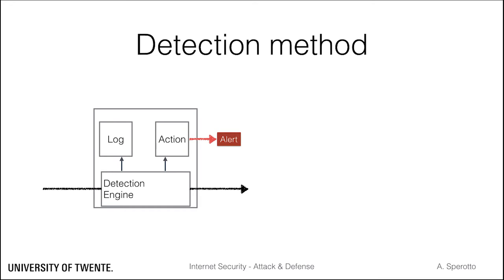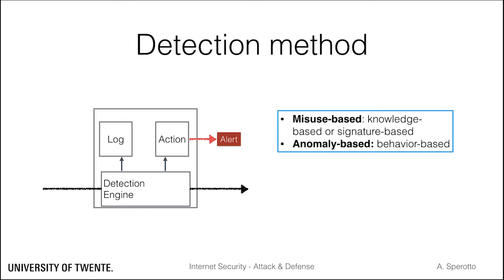An IDS can be anomaly-based or misuse-based. Misuse-based IDSs are also known as knowledge-based or signature-based IDSs, while anomaly-based IDSs are also known as behavioral-based IDSs. This category refers to the internal functioning of the detection engine, which bases its decision on a model of reality — either how an attack looks like or how normal traffic looks like.